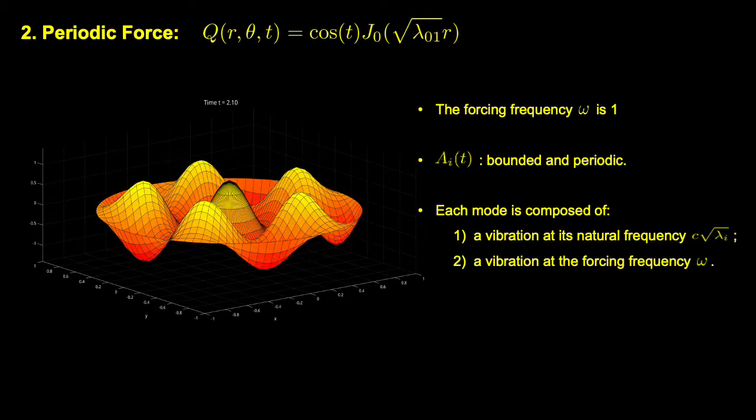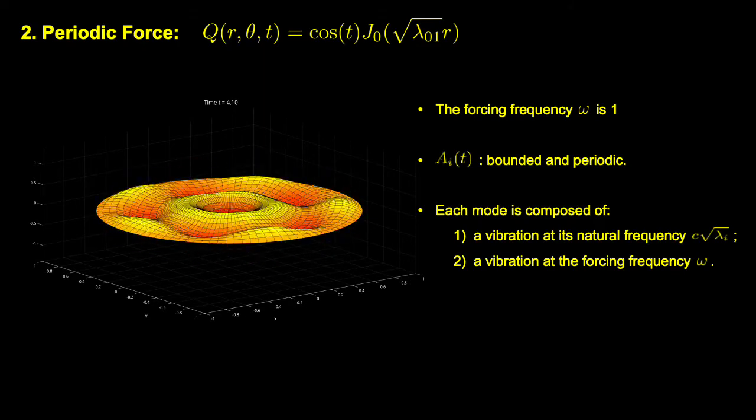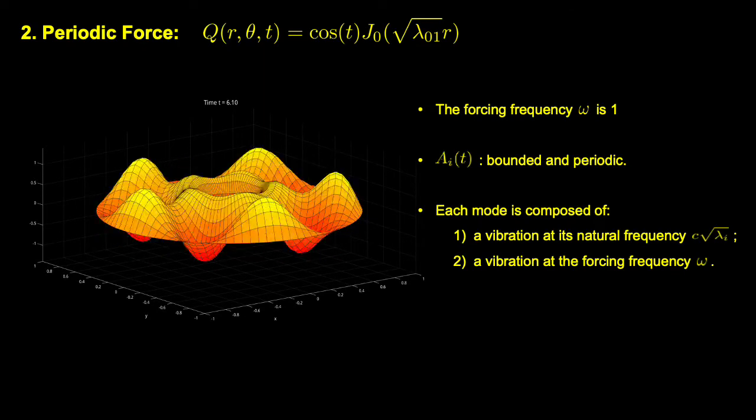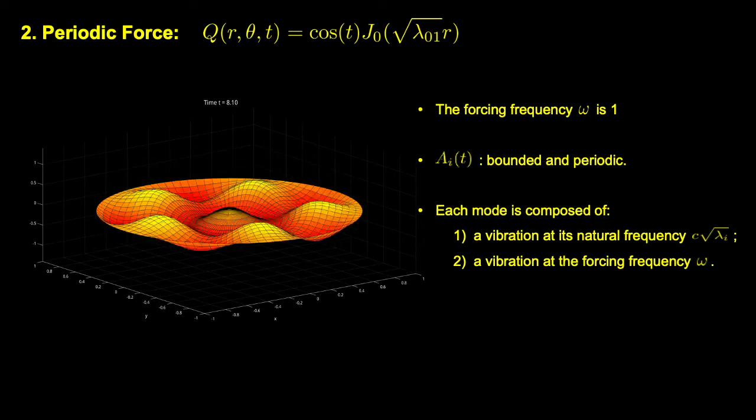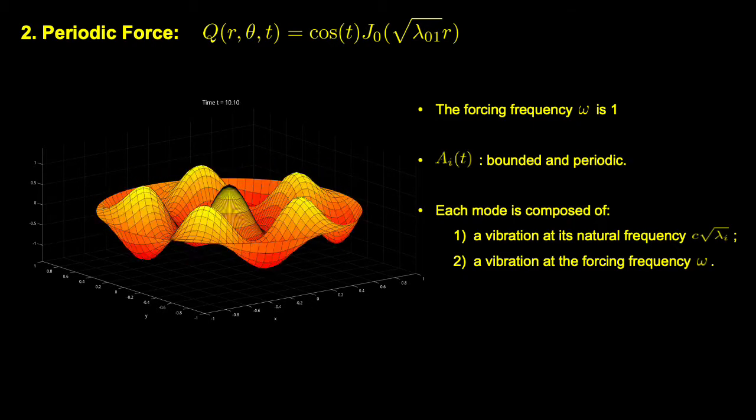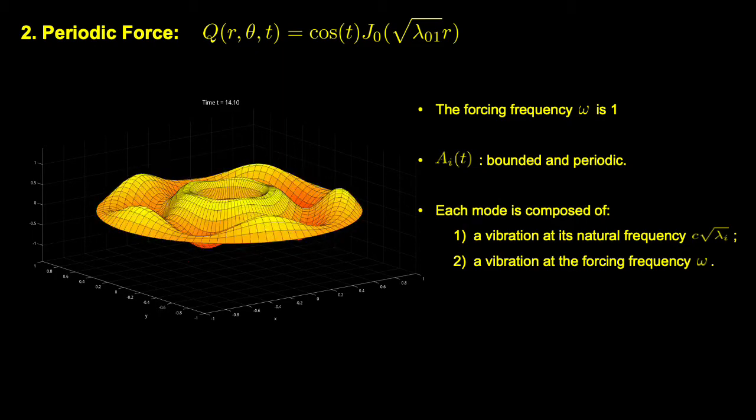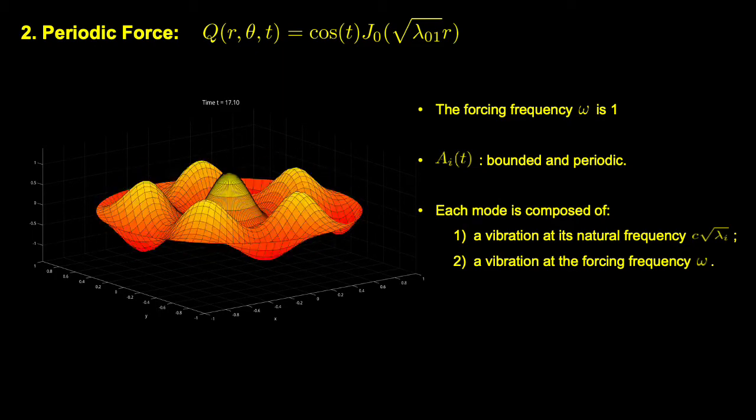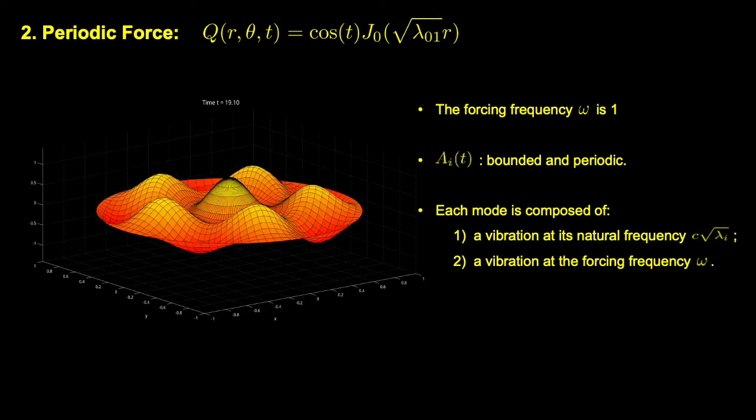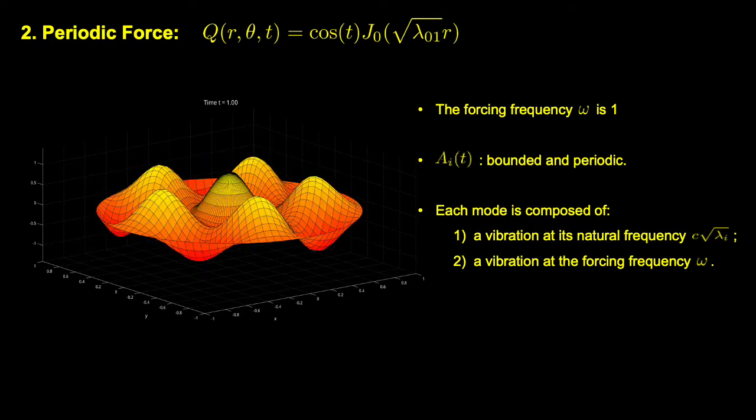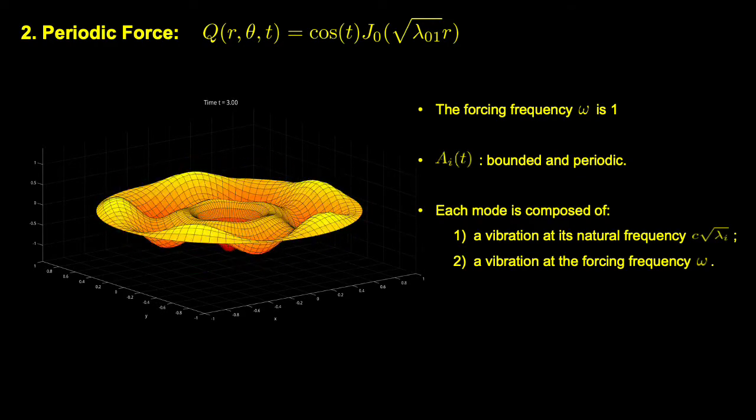In the example of periodic force, the forcing frequency here is 1, and a_i(t) is bounded and periodic. Each mode is composed of a vibration of its natural frequency c*sqrt(lambda_i) and a vibration at the forcing frequency lambda equals 1.